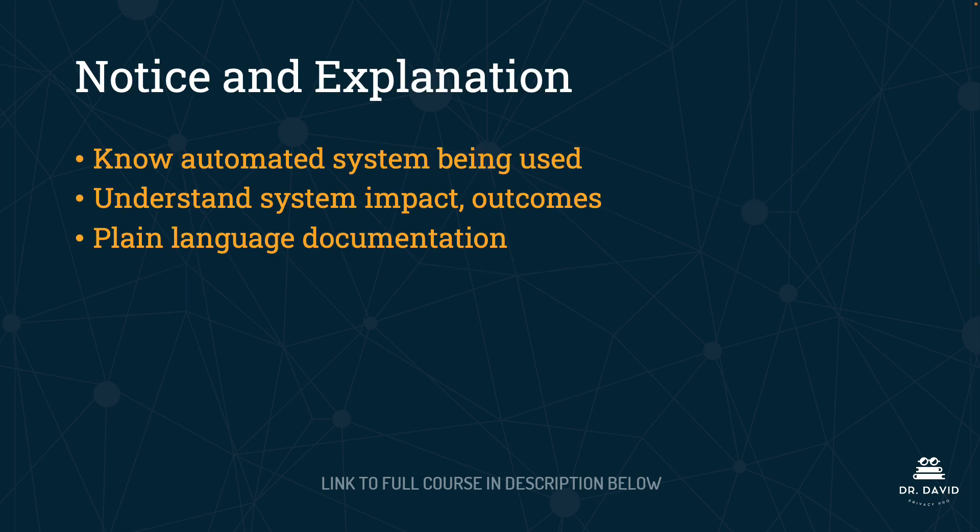Principle four is notice and explanation. This advocates for individuals knowing that an automated system is being used — similar to a privacy notice, an AI system notice would say you're interacting with a chatbot, for example, or if an AI system supports a doctor's diagnosis, the patient would know the doctor used an AI tool to reach that conclusion. Individuals subject to the system should understand the system's impact and outcomes, and any explanations or impact assessments, especially those that are public-facing, should be in plain language.